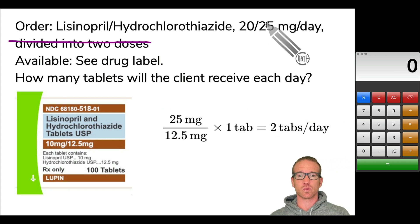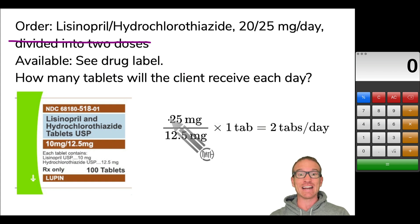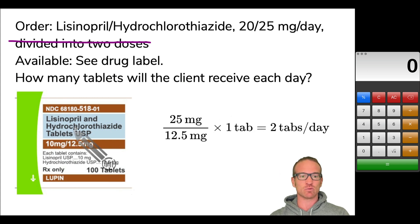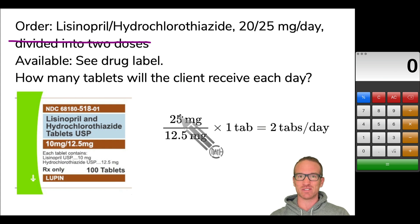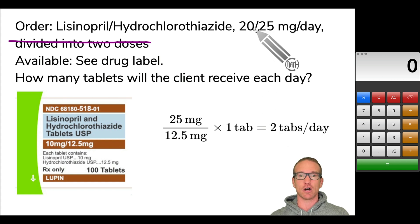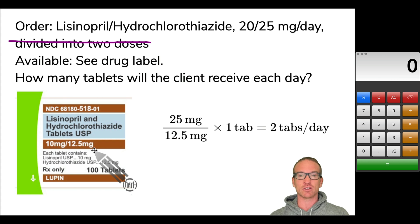Something to note: had you used the 25 milligrams of hydrochlorothiazide as your desired instead, that's totally fine — as long as you use the 12.5 milligrams of hydrochlorothiazide that is available. Notice these two values are different, but if you take 25 divided by 12.5, that gives us two times one tablet — two tabs per day. Same answer. It doesn't matter which one you use because these should be proportional to the two strengths on the drug label. That's just the way these dose calc problems work.